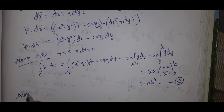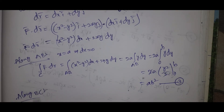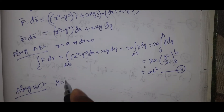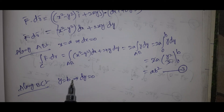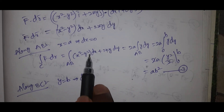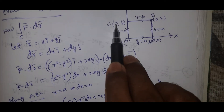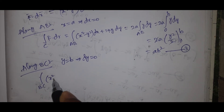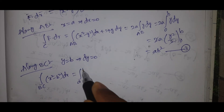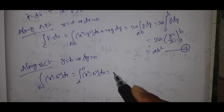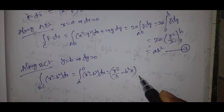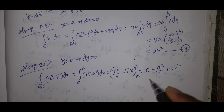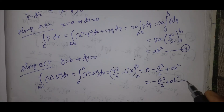Along BC: y = b, that implies dy = 0. And x limits are from a to 0. Integral along BC of (x² - b²)dx = integral from a to 0 of (x² - b²)dx = [x³/3 - b²x] from a to 0 = 0 - (a³/3 - ab²) = -a³/3 + ab². This is equation number 4.